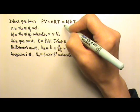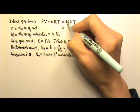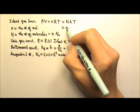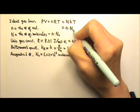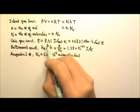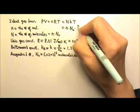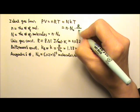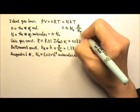So if I replace the big N with the little n, the number of moles times Avogadro's number, and replace Boltzmann's constant with R, the gas constant divided by Avogadro's number,